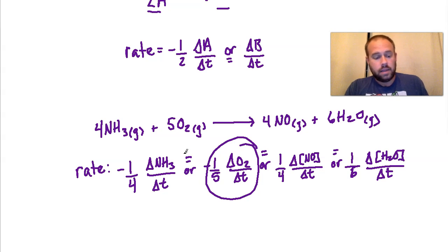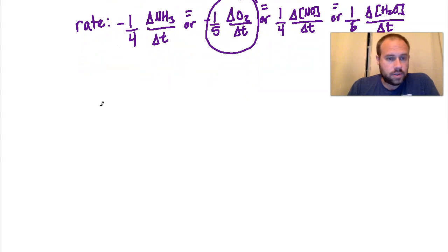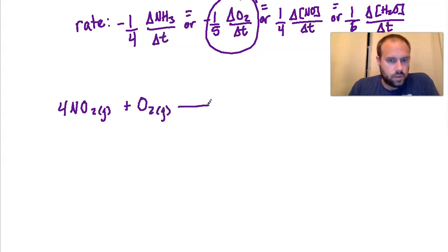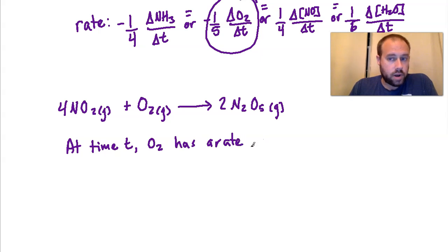Let's attempt a problem using numbers. We have: 4 NO₂ gas plus O₂ gas yields 2 moles of dinitrogen pentoxide gas. At some time T, the O₂ has a rate of 0.037 molarity per second. We are going to look for two things based on this information: A) at what rate is N₂O₅ being formed, and B) at what rate is NO₂ reacting.